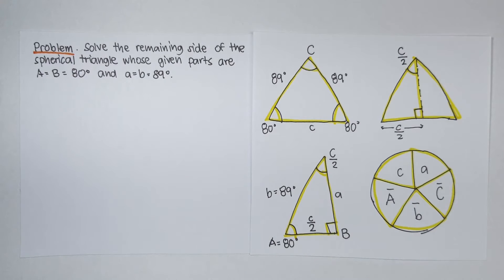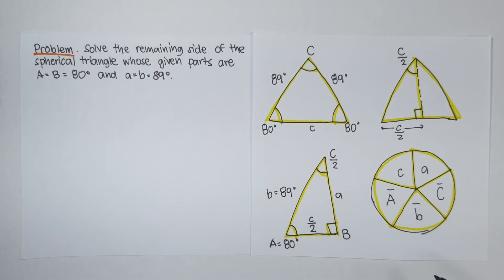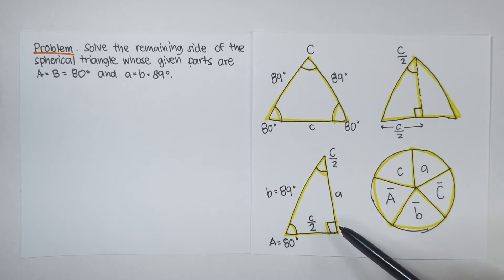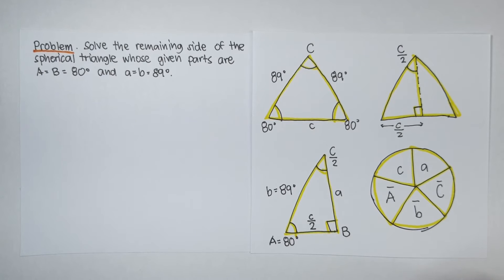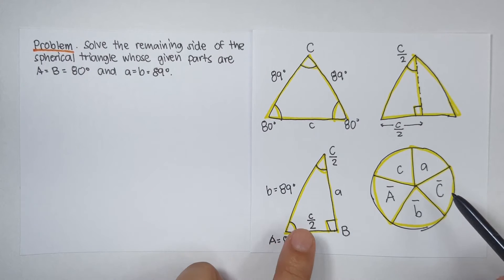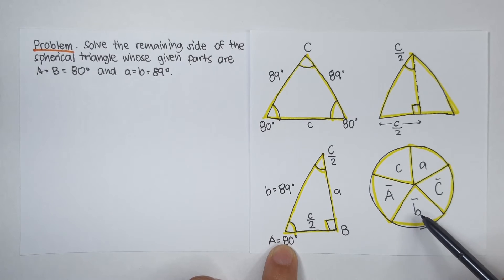But for this problem, let's do a minor revision for a Napier's circle. Because in this case, in our problem, we let our angle here, angle B, be the 90 degree angle. So, our revised Napier's circle is B bar. Why B bar? Because angle B is our 90 degree angle, so we have to put B here.